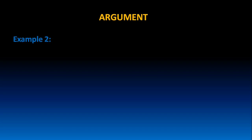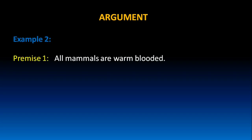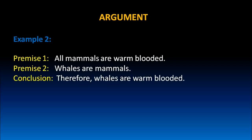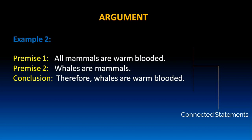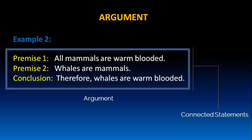Let us take one more example. All mammals are warm-blooded. Whales are mammals. Therefore, whales are warm-blooded. In this example also, these three statements are connected statements, which means the conclusion can be derived from the given two premises. Hence, this collection of statements can be called an argument.